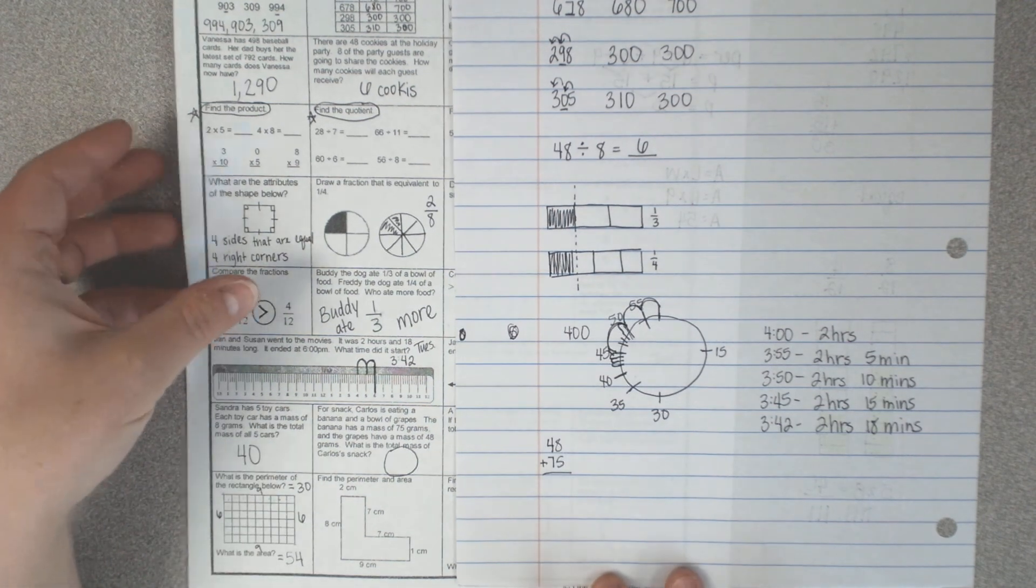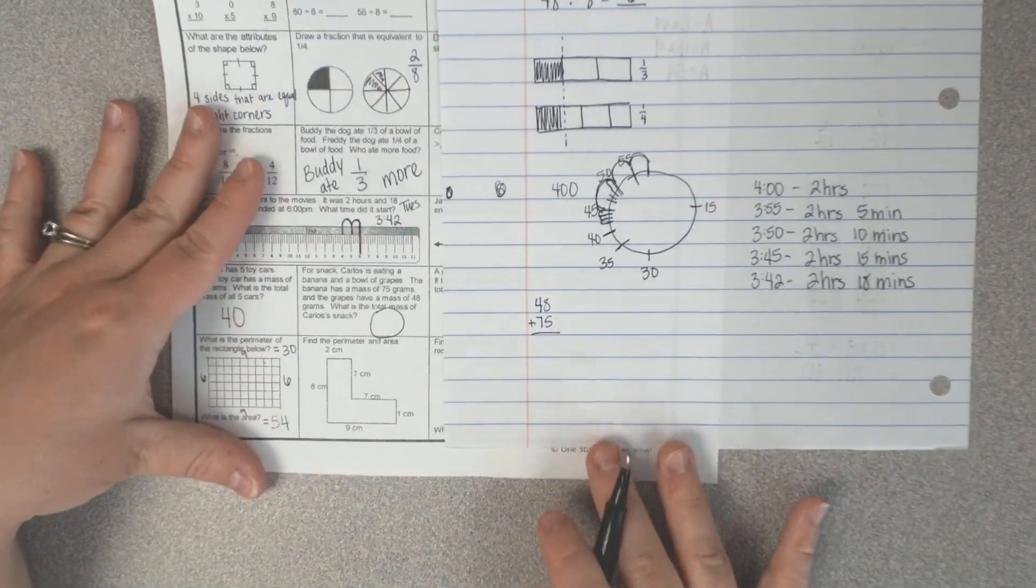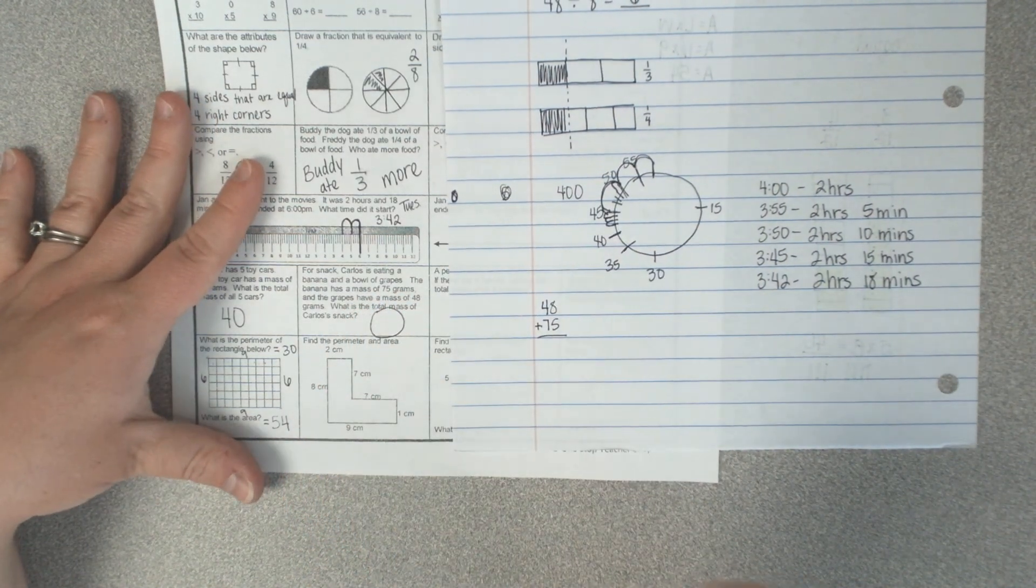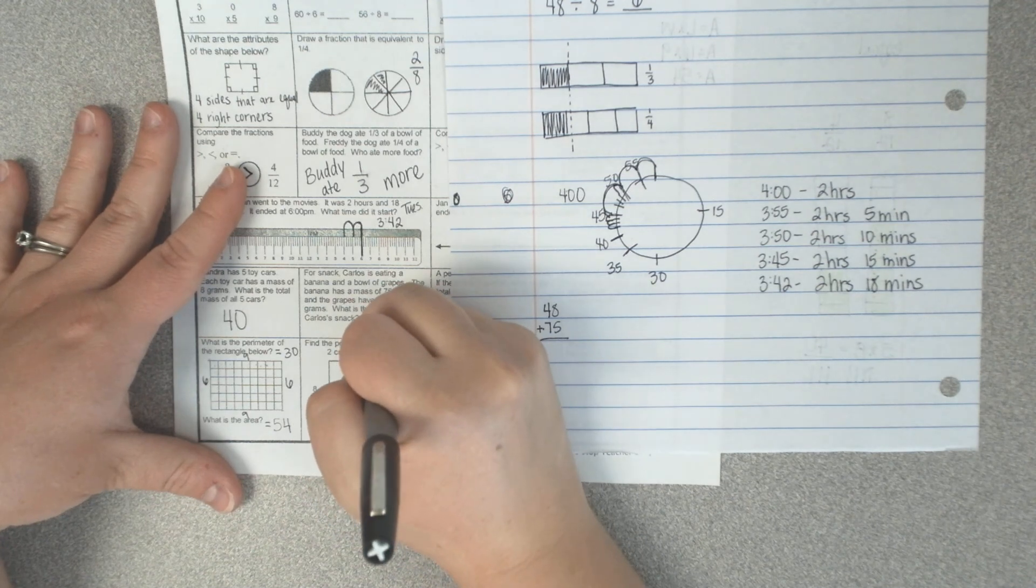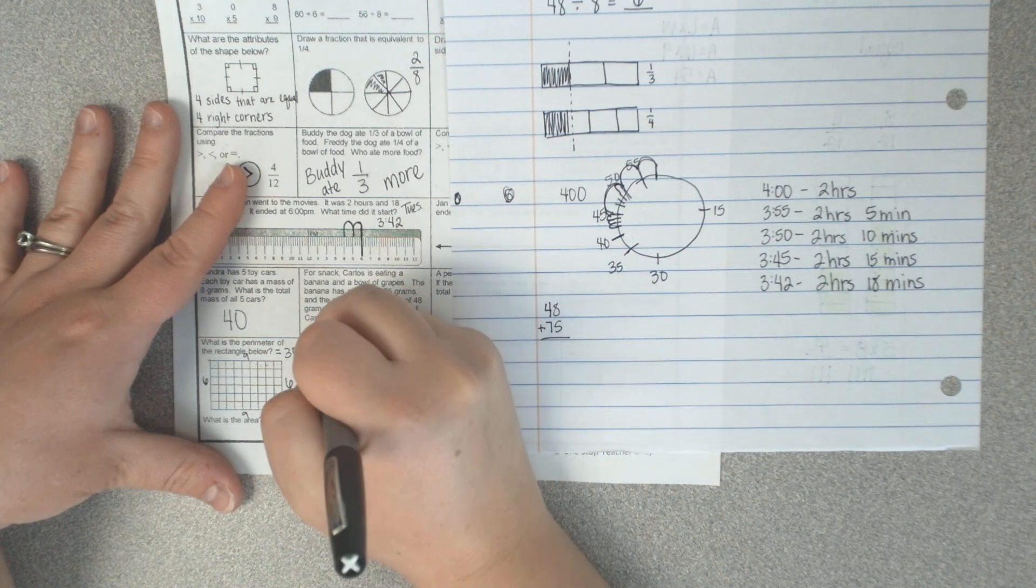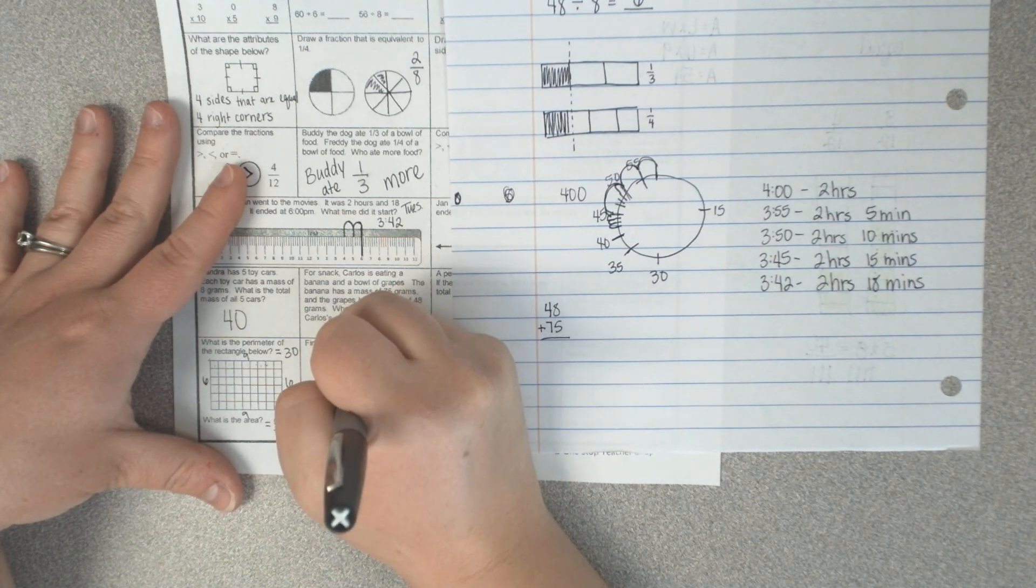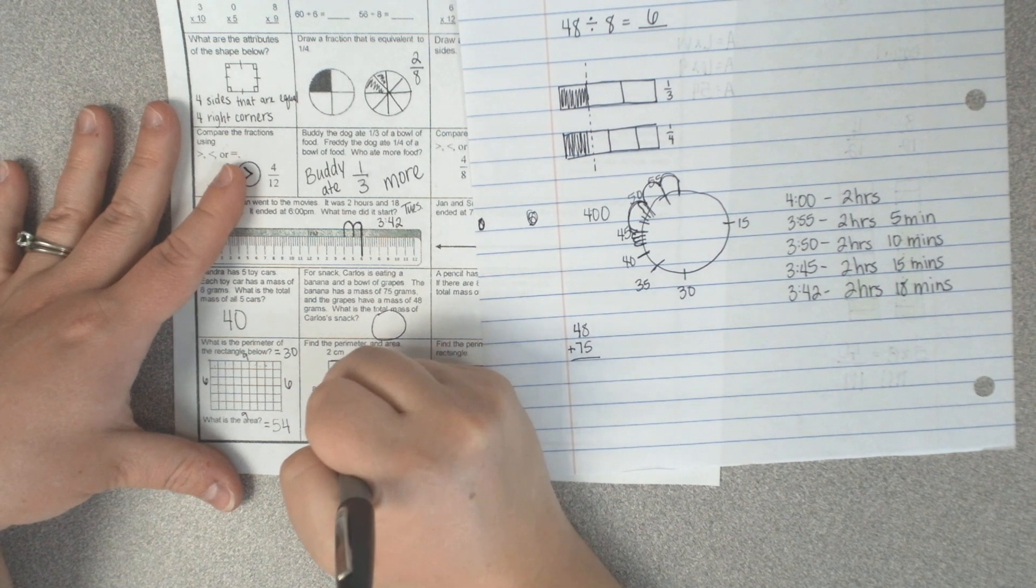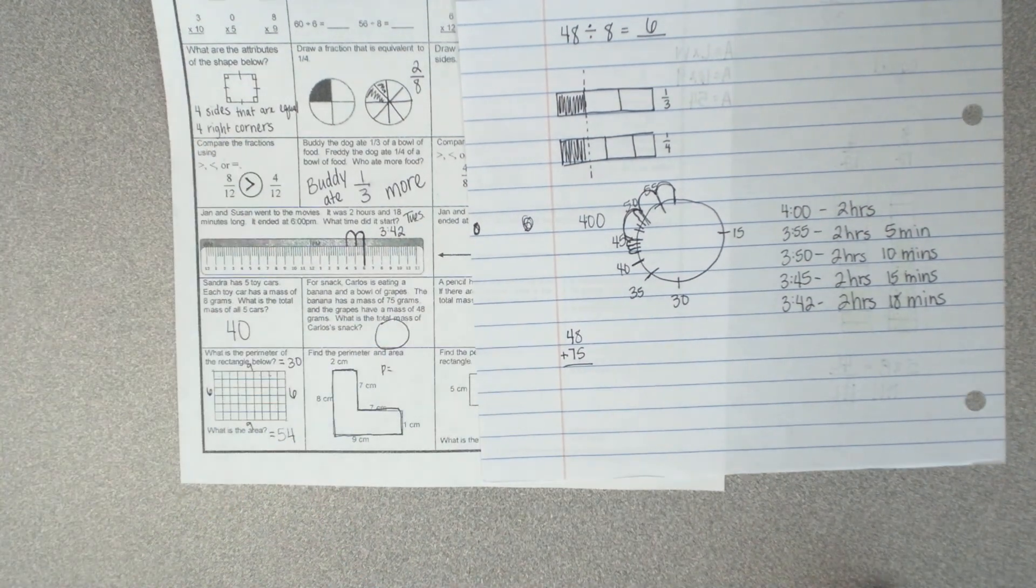And then we're going to find the perimeter. So remember, the perimeter, you are adding up all the sides. So find all the sides and tell me what is the perimeter. Remember, you have to add 2 plus 7 plus 7 plus 1 plus 9 plus 8. Alright guys, I'll see you next time. Goodbye.